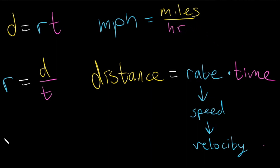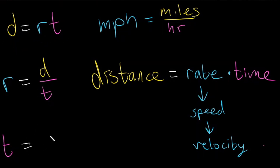Let's solve for t. If we go back to our original formula and divide by r on both sides, t is going to be equal to d over r.